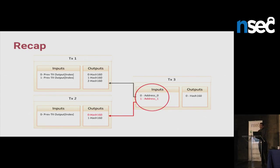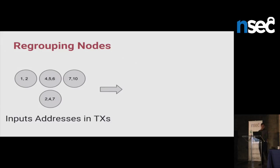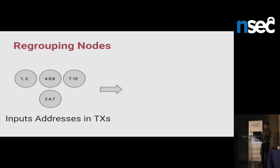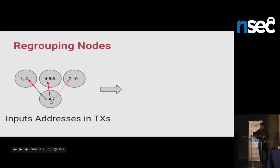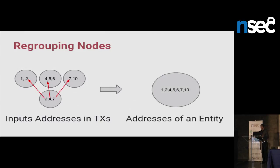So I can tell that those two addresses belong to one entity on the network — it could be a person, an automated system, a laundry scheme, anything. For example, parsing four transactions, I found that addresses one and two were used together, addresses four, five, six were used simultaneously, and seven, ten — and another transaction used two, four, seven. So basically I can associate them: the entity has addresses one, two, four, seven — because it reused the same addresses in different transactions. You can do this for all nodes, merge it together, and tell which addresses belong to an entity.